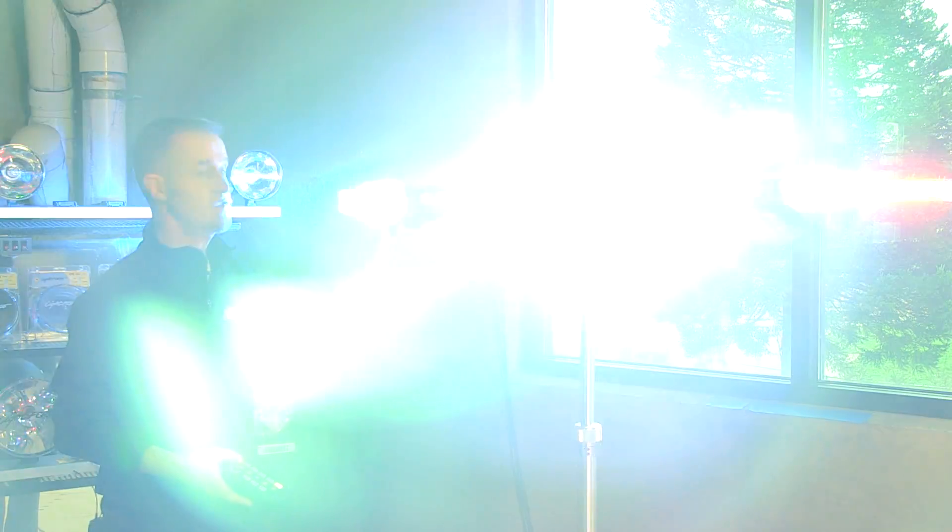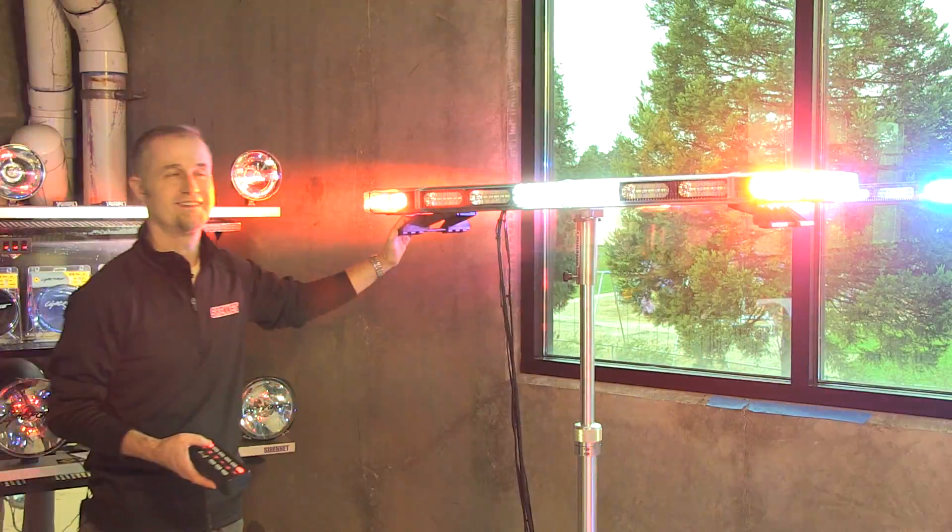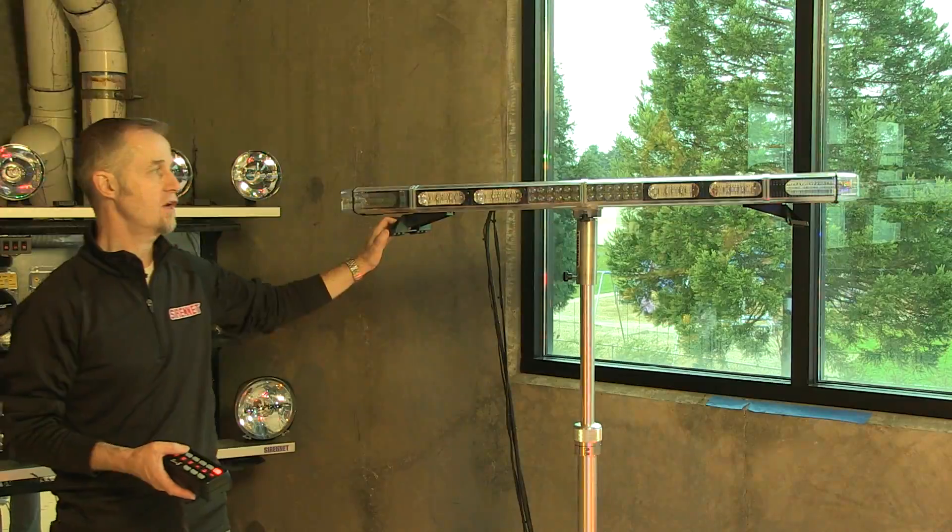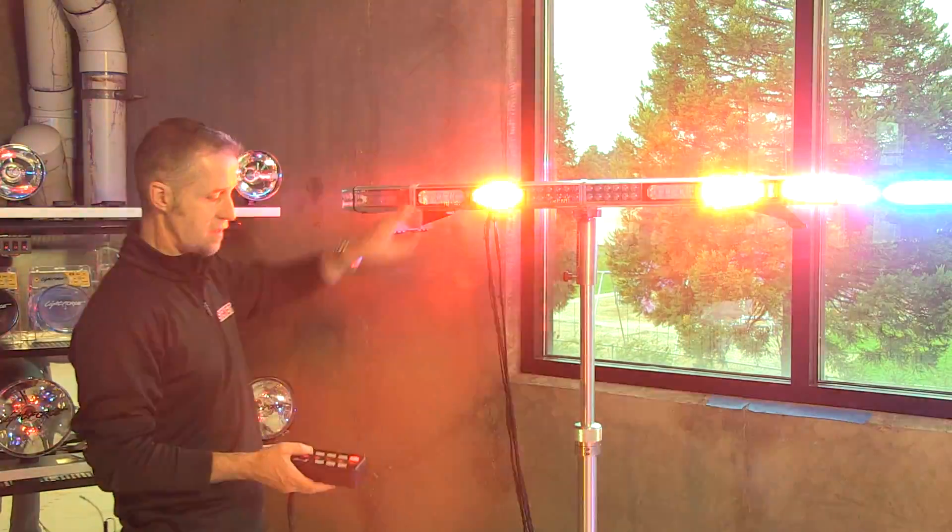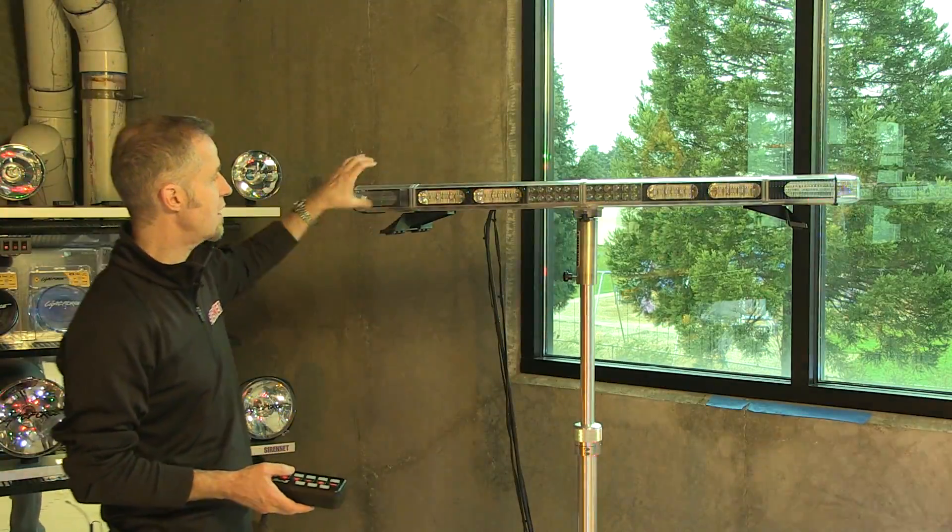Of course, if you decide to have your takedowns on, we can blind the camera crew. Turn it on right there. And again, it's a fully functioning light bar. So in this particular area here, let's just turn these off for a second. We can get the camera to zoom in.